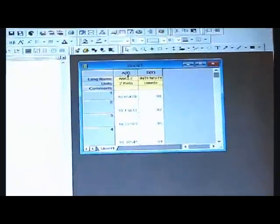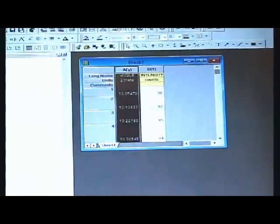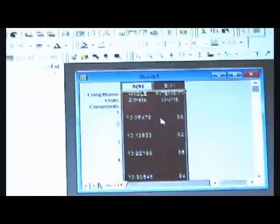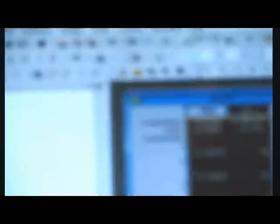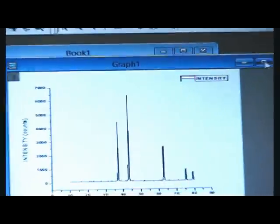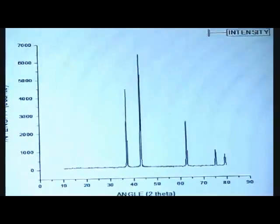Now we can plot it. So select the A(X) and B(Y) columns. Then go to the graph icon and click on it. Now we get the plot of given XRD data.